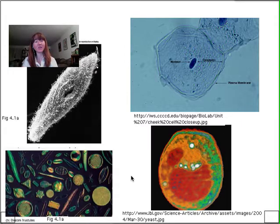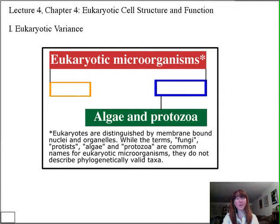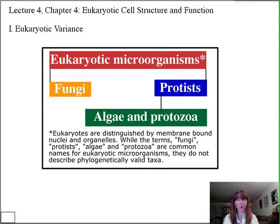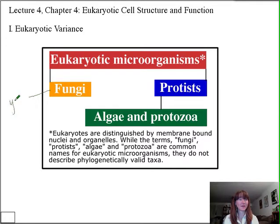There's a great deal of diversity amongst the eukaryotic world. The microbial membership includes the fungi and the protists — these are the representative groups of eukaryotic microorganisms. We've already worked with some fungi members; yeast, for example. Saccharomyces cerevisiae is a great example — that is baker's yeast, also used to brew beer and make wine. Fungi also incorporate the molds.